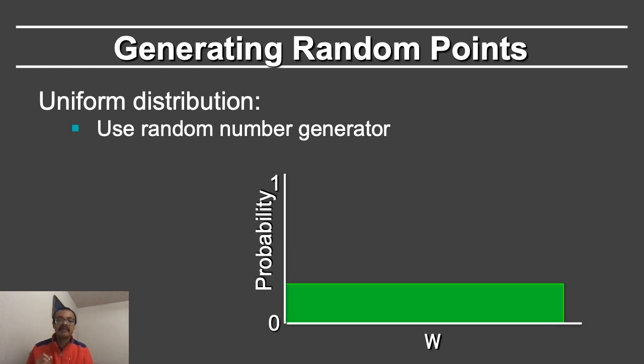There are a variety of random number generators. Of course, true randomness in nature would require you to do something like look at the radioactive decay of an element. But the pseudo-random number generators in modern computers can produce something that is very close to true randomness.